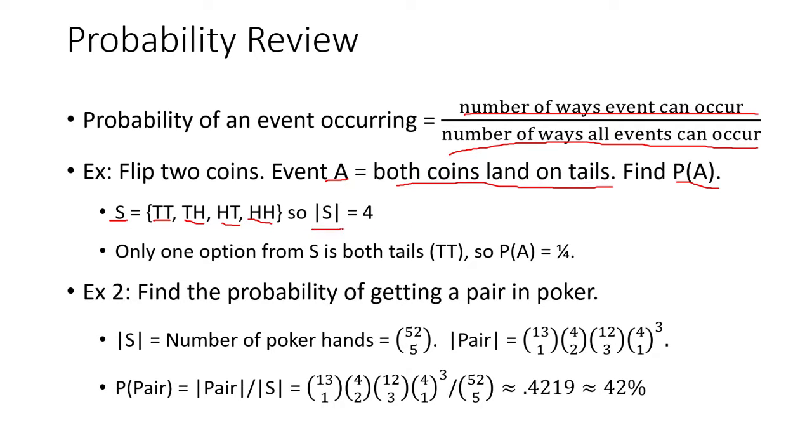And if we compute the cardinality of S we can see that it's simply 4. So that's the number of ways all the events can occur. Notice that only one option from the sample space is both tails. So that means the probability of both coins landing on tails is going to be 1 over 4.